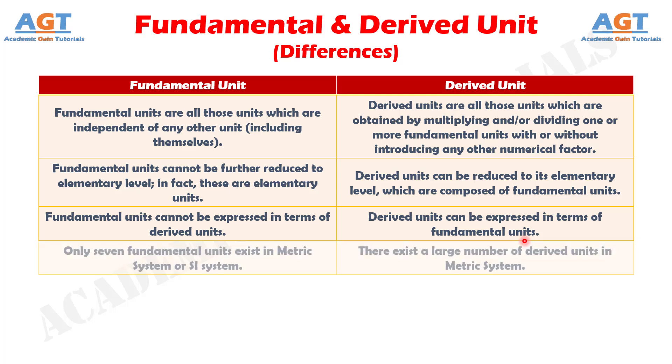Number 4: Only 7 fundamental units exist in the metric system or SI system, whereas there exist a large number of derived units in the metric system.